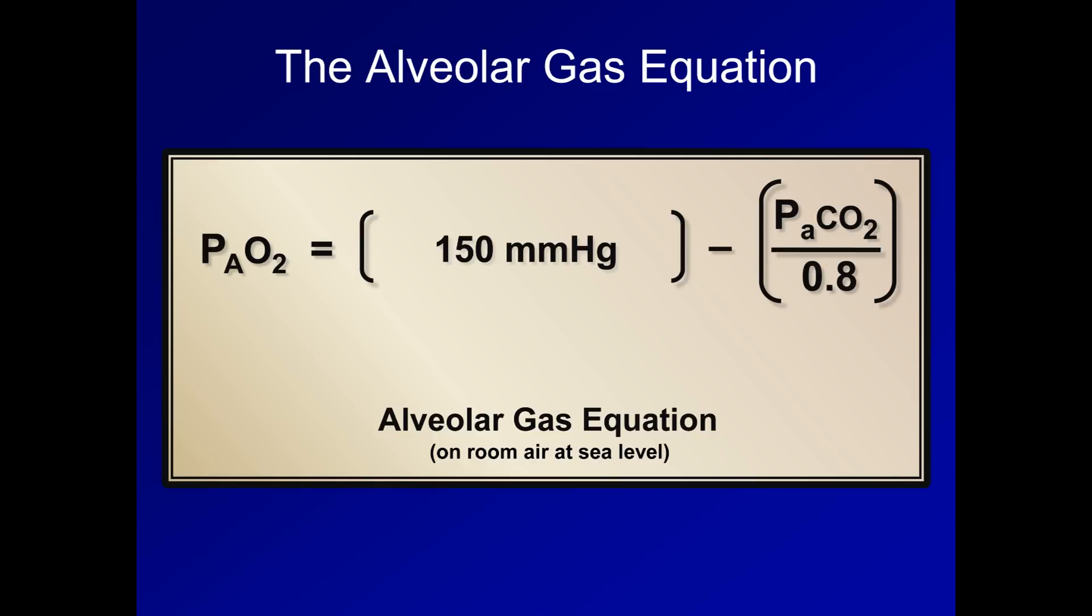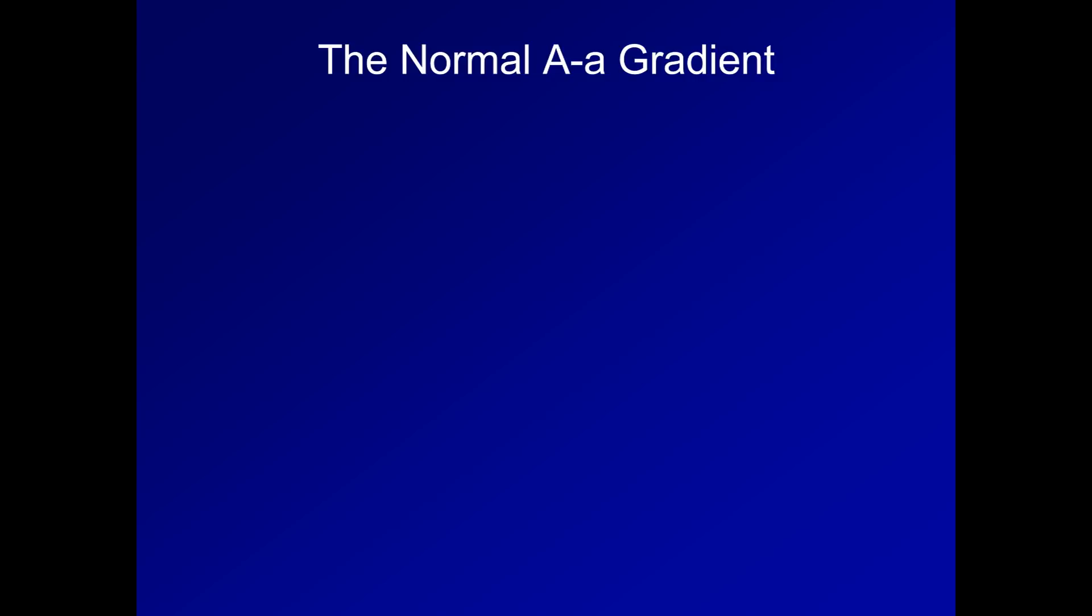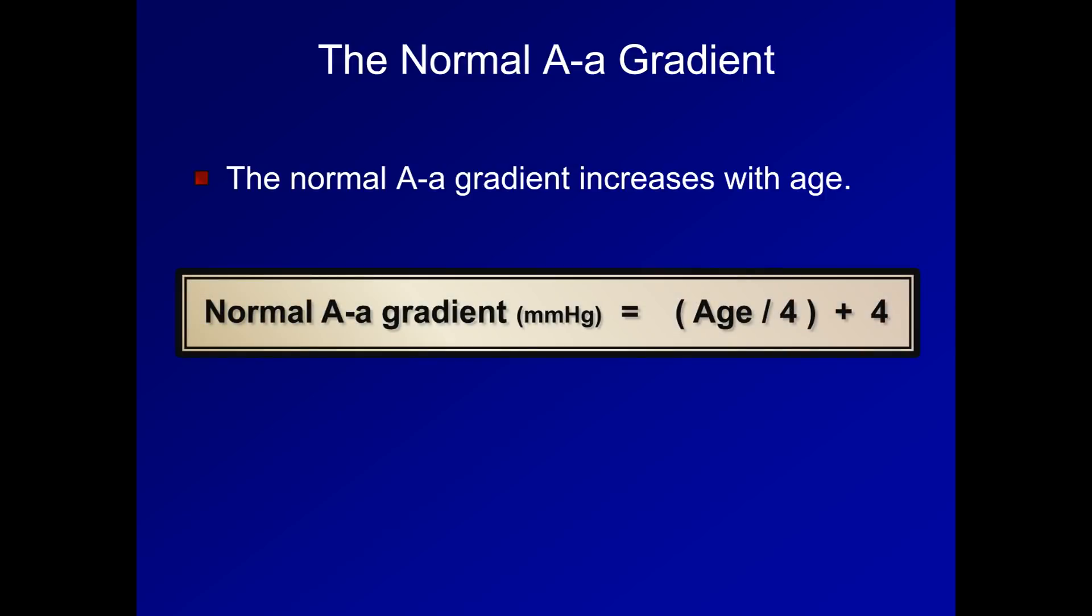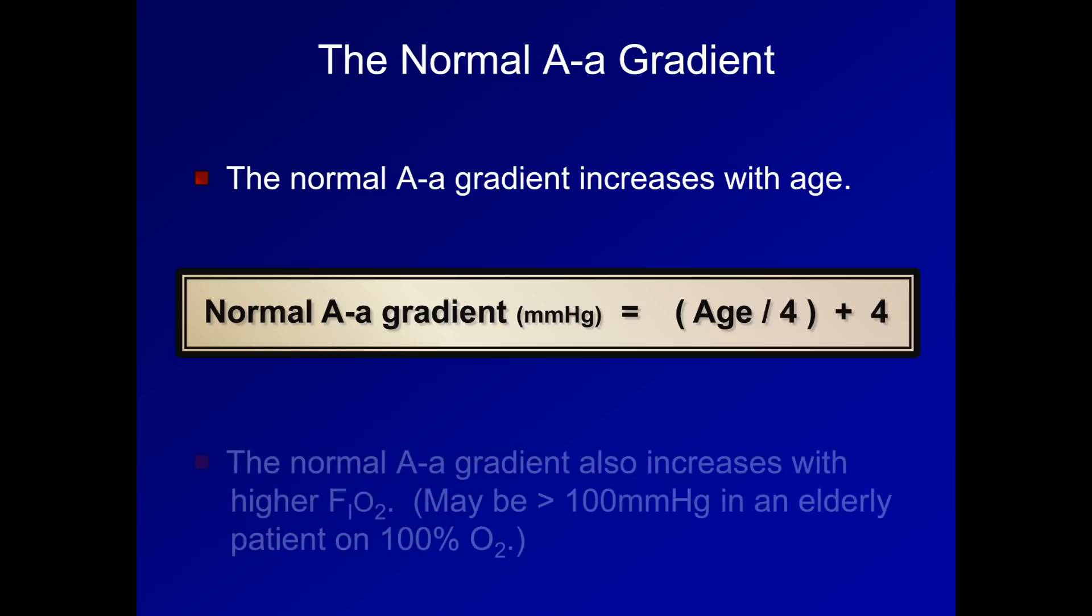So now that we can estimate PAO2, and since PaO2 can be measured directly, we can now calculate the AA gradient. However, we need something to compare it to in order to know if a patient's AA gradient is actually abnormal. Unfortunately, there is no one normal range for the AA gradient because it increases with age. There are several equations floating around that will allow one to estimate the normal AA gradient for age, all of which are empirically derived. I don't think anyone can really say which equation is best per se or most accurate, but the most frequently employed one is this. The normal AA gradient in millimeters of mercury is equal to the patient's age in years divided by four plus four. You should also note that the normal AA gradient also increases with higher FiO2 and can be over 100 millimeters of mercury in an elderly patient breathing 100% oxygen. This will be discussed more in the next lecture.